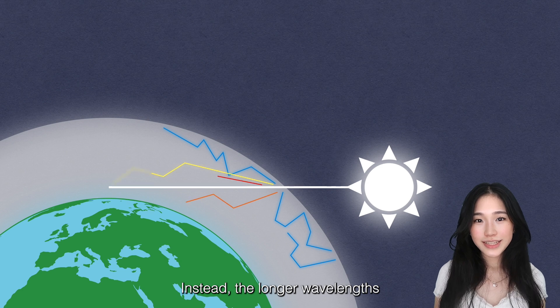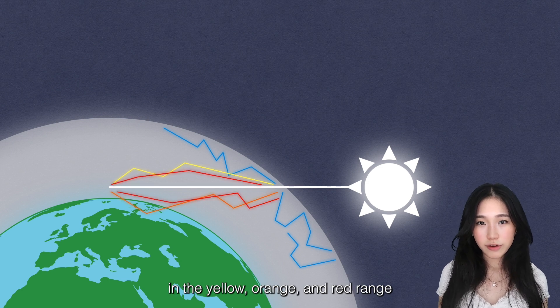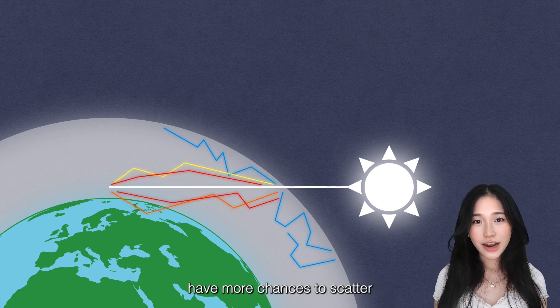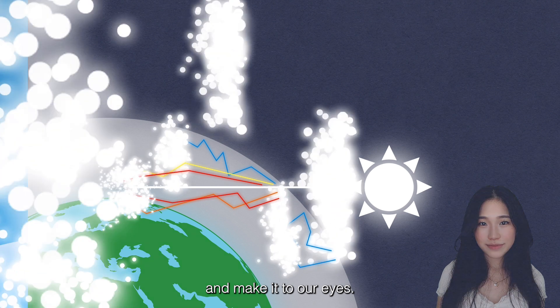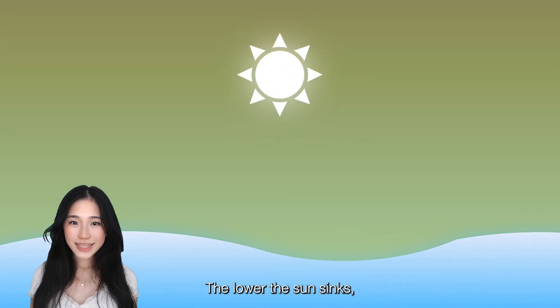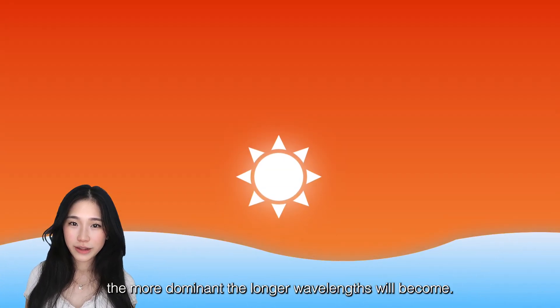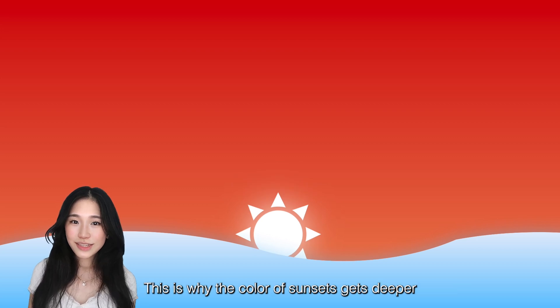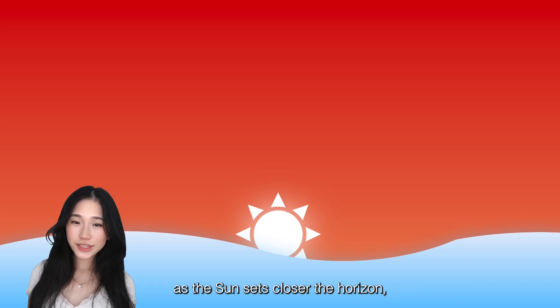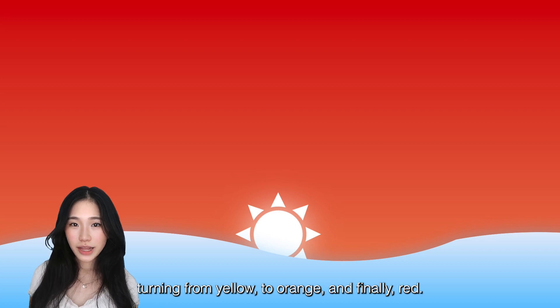Instead, the longer wavelengths in the yellow, orange, and red range have more chances to scatter and make it to our eyes. The lower the Sun sinks, the more dominant the longer wavelengths will become. This is why the color of sunsets gets deeper as the Sun gets closer to the horizon, turning from yellow to orange and finally red.